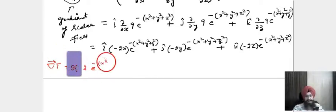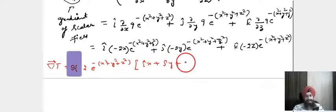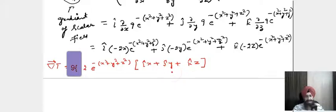The result is the gradient of the scalar field. Taking 9 and 2 common, we get 2 times 9 times e raised to power minus (x² + y² + z²), and inside the bracket we are left with the vector i-cap x + j-cap y + k-cap z, which is our R vector.